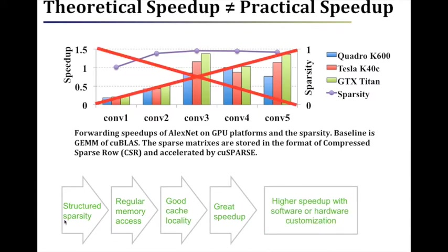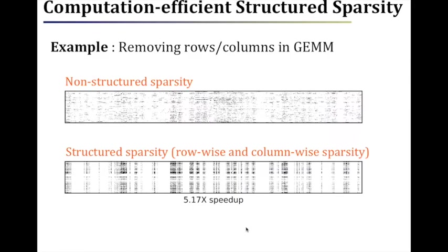If we can learn DNNs with structured sparsity such that the data locality is good, then we can get great speedup. Here is an example to show the computation efficiency of structured sparsity. In weight matrix multiplication, if the sparse weights are randomly distributed like this one, the data locality is bad. However, if we can learn a weight matrix with structured sparsity with a high ratio of all-zero columns and rows, then we can remove them and compress the remaining non-zero weights into a much smaller but dense weight matrix. It will give us great speedup.